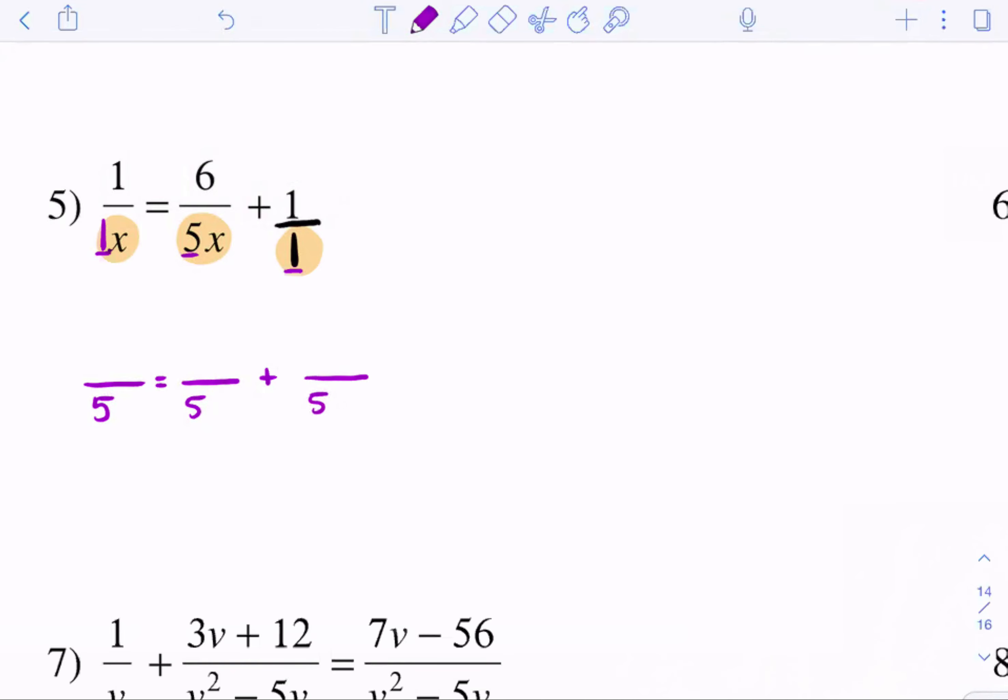What is the least common multiple? Five. Then for the variables, here I have an x, here I have an x, and here I have nothing. So what variable can I make all of them? Just x. So now I have to ask, 1x times what will give me 5x? Times 5. So 1 times 5 is 5. 5x times what is 5x? I only have to multiply this one by 1. And then 1 times what is 5x? This one would have to be 5x. So I need to do 1 times 5x, which is 5x.